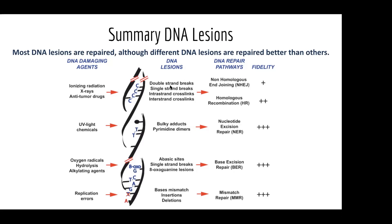We can see things like a double strand break. There are also crosslinks, where the two strands get linked together. We can see two neighboring base pairs being glued together, which we call dimers. We can also see base pairs being added — called insertions — or base pairs being deleted — called deletions. For all these specific types of DNA lesions, there are DNA repair pathways supposed to come back and fix everything.